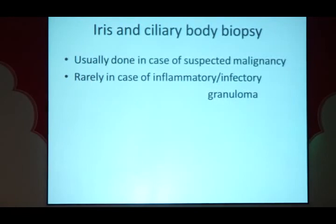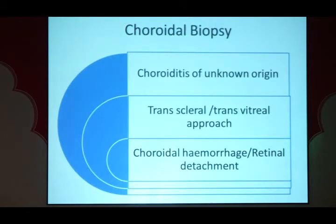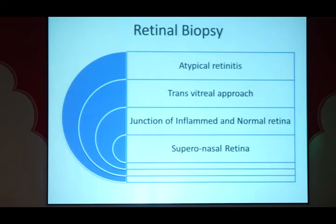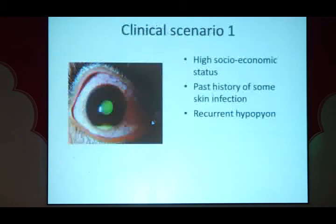Iris and ciliary body biopsy is usually done for suspected malignancy, or rarely for infectious granuloma such as tuberculosis or leprosy, or inflammatory granuloma like sarcoidosis. Choroidal biopsy is done in non-responding treated patients via a transgleral or transvitreal approach, with the risk of choroidal hemorrhage and retinal detachment. Retinal biopsy is done for atypical retinitis via a transvitreal approach, sampling the junction of inflamed and normal retina — the periphery of inflamed retina is more likely to harbor organisms. The supranasalquadrant is selected as it protects the macula from retinal detachment and is easier to tamponade postoperatively.